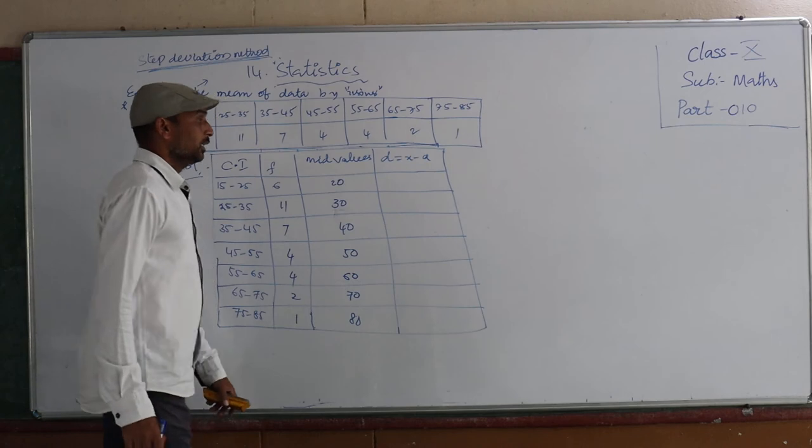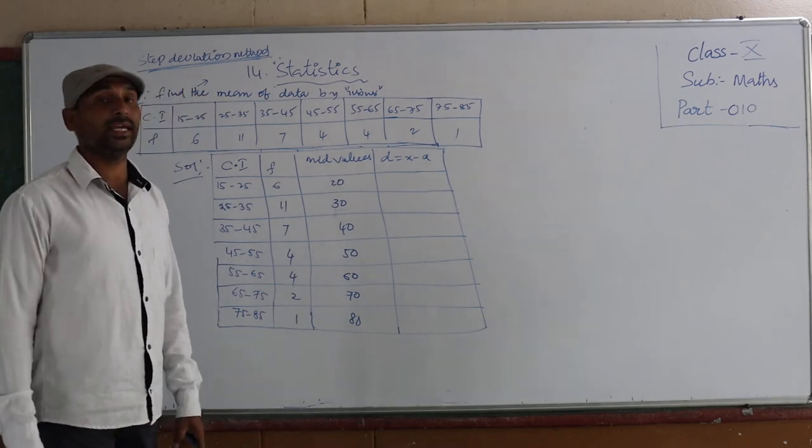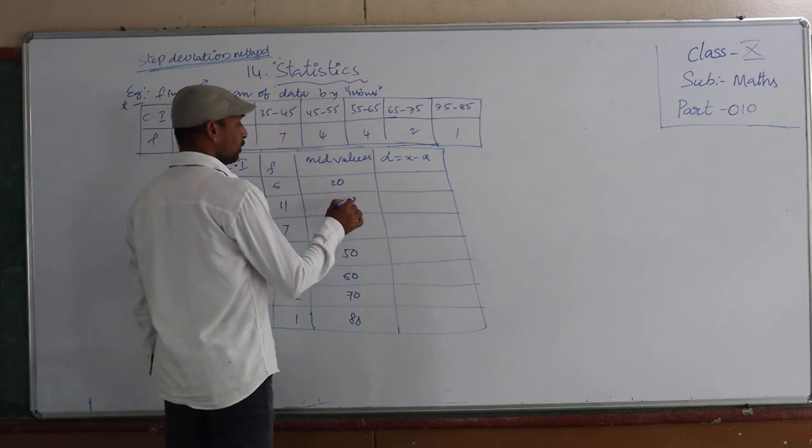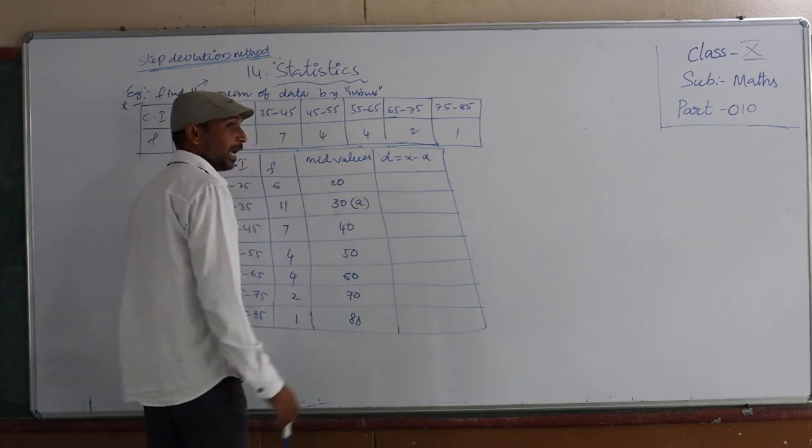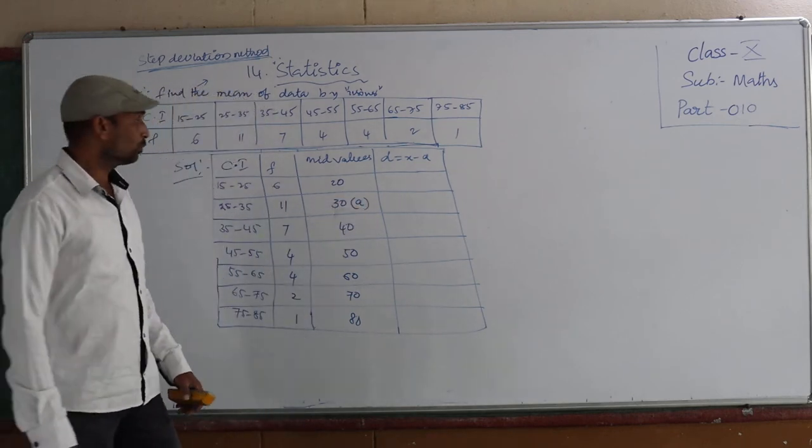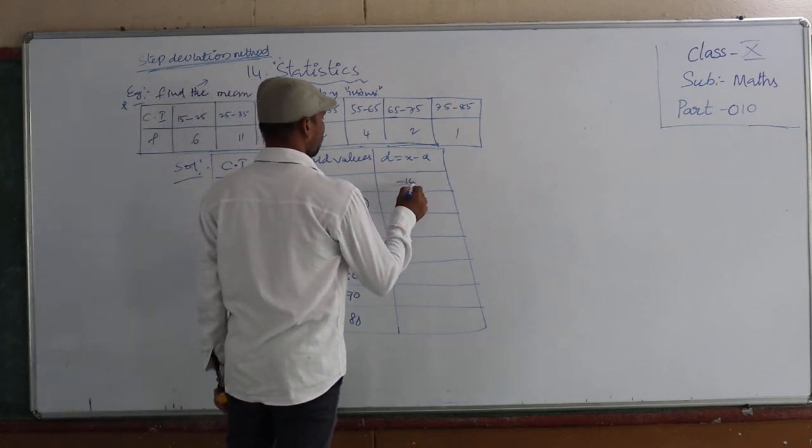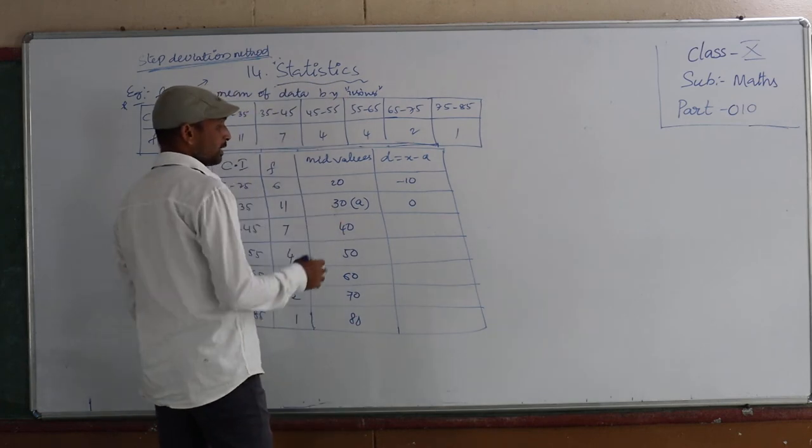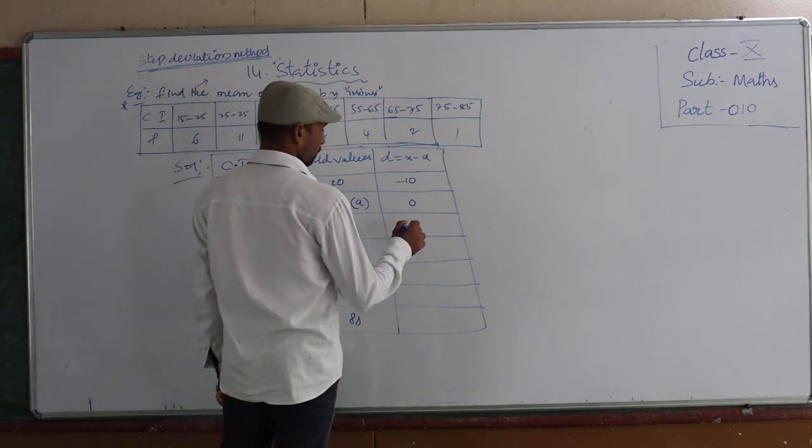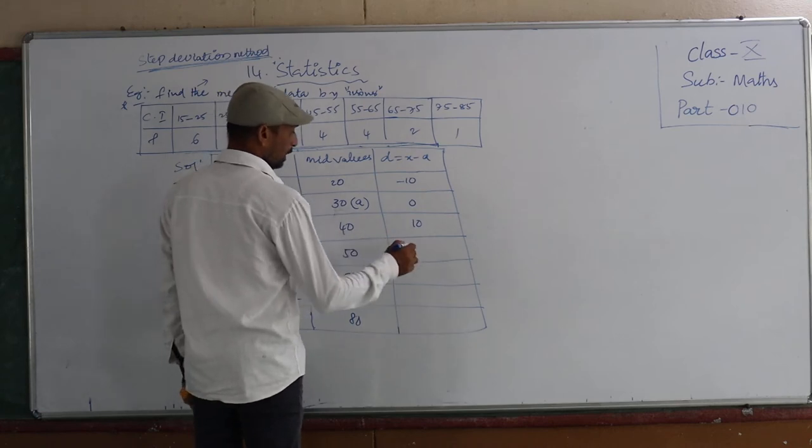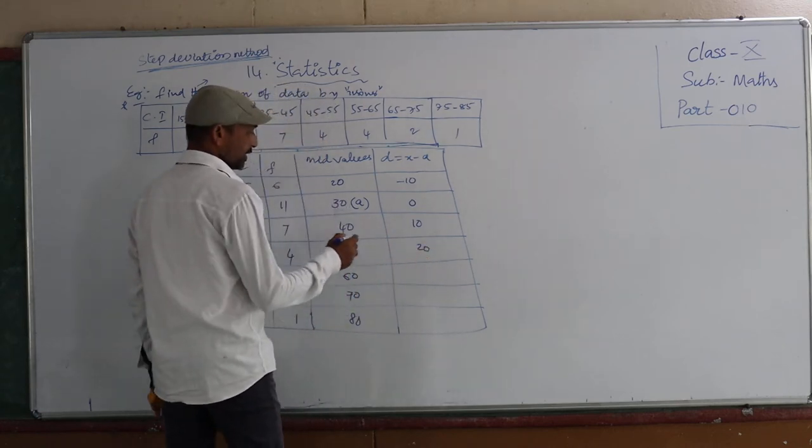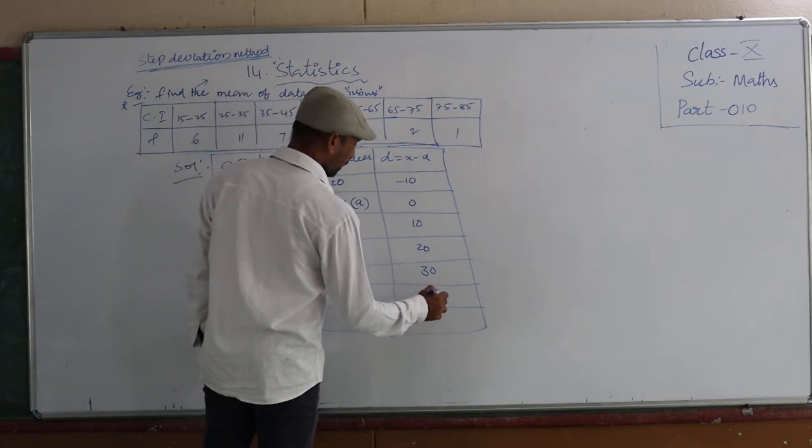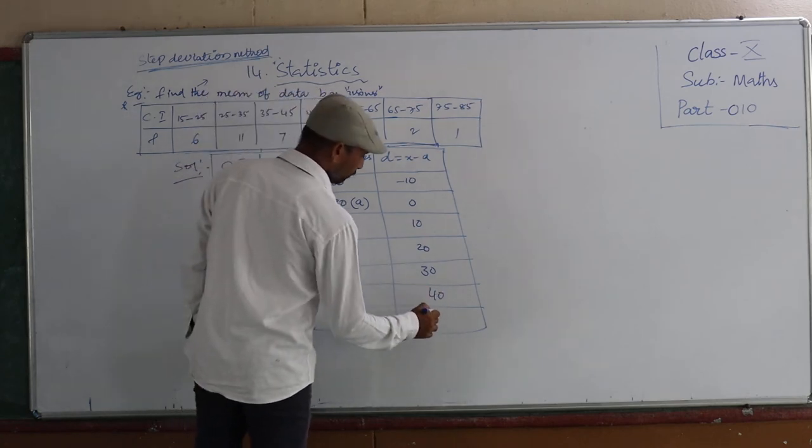Then X minus A. Already I told you, take the frequency with the biggest value, the strongest one, as A, which is the mid value 30. Then here: 20 minus 30 equals minus 10, 30 minus 30 equals 0, 40 minus 30 equals 10, 50 minus 30 equals 20, 60 minus 30 equals 30, 70 minus 30 equals 40, 80 minus 30 equals 50.